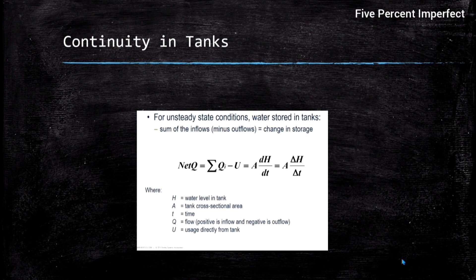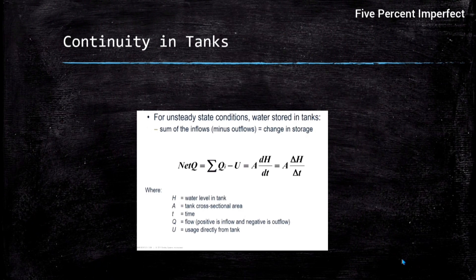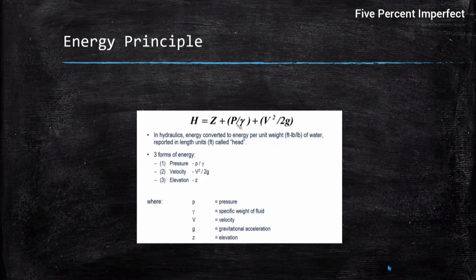This principle describes what happens to a tank with respect to the network. If we have a total inflow of Qi (positive inflow) and total outflow or usage U, then the difference between the two gives the volume change in the tank, represented by the area multiplied by the height change. This net discharge comes out of the tank.